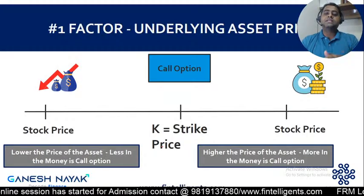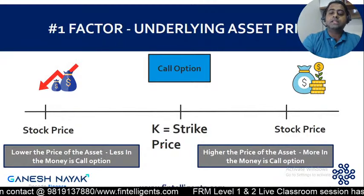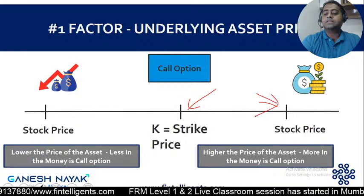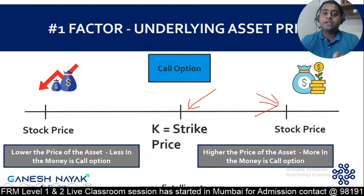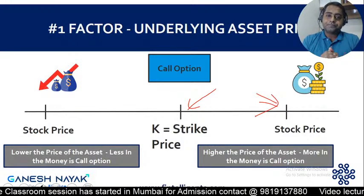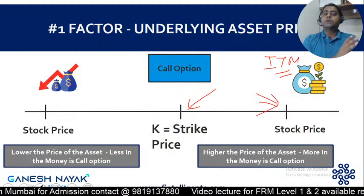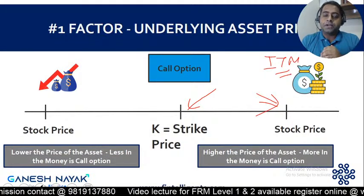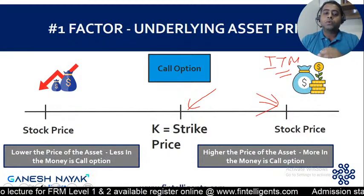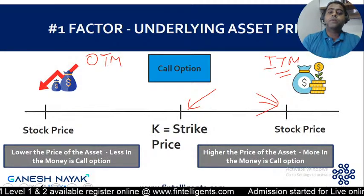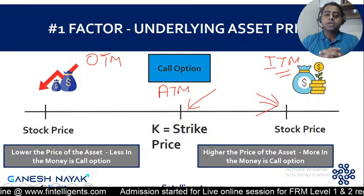Let's look at the call option. If we're talking about a call option, suppose the strike price is 100 and the underlying asset keeps on increasing - it goes above 100 - then the option is in the money. As the underlying asset increases, the call option becomes more in the money. As the underlying asset goes down, the option becomes out of the money. When the underlying asset and strike price are the same, it's an at-the-money option.